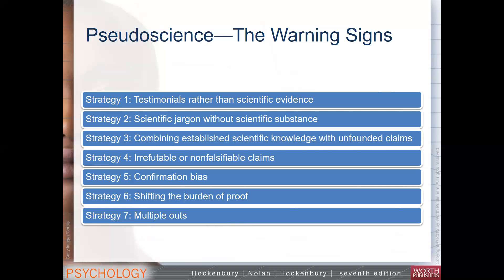Another thing is combining actual science with unfounded claims. For example, Earth does have a magnetic field — check. Blood does contain iron and minerals — check. But what they leave for you to put together or falsely imply is that the iron in your red blood cells is attracted to magnets in the way a magnetic bracelet would work. In fact, the iron in red blood cells isn't magnetic or attracted to magnets in that sense, so it's not going to affect your blood flow. Combining real science with fake information can really throw people off.